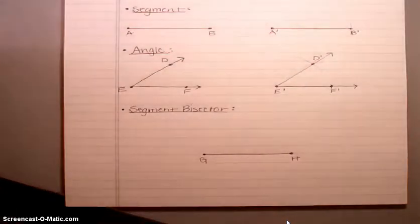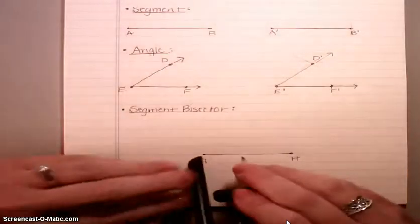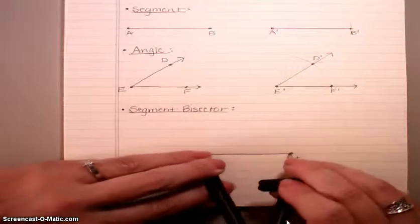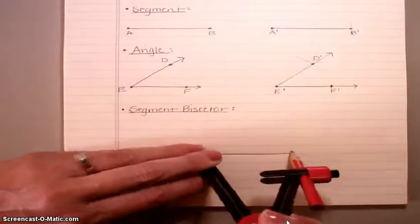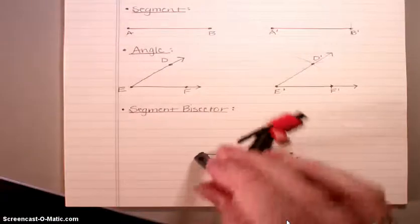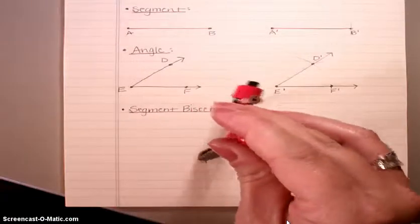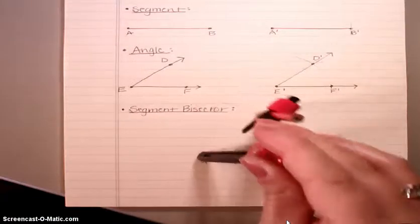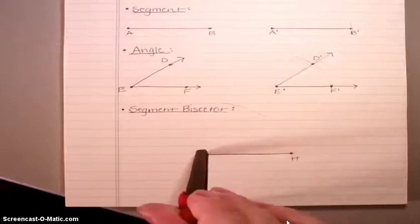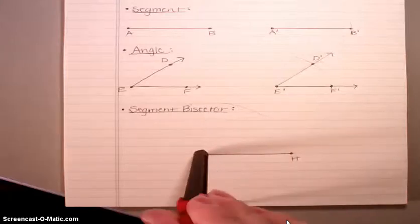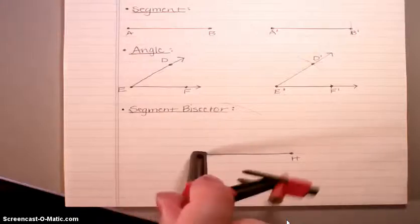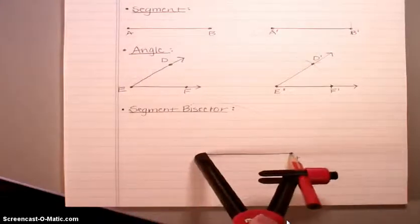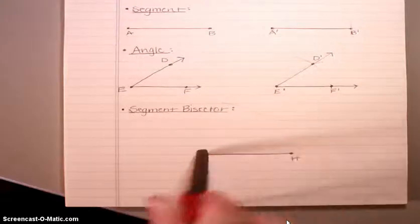Take your pin and put it on G, and take your pencil and put it on H. Leave your pin on G, come up and make a light arc above, then come below and make a light arc below. Notice I have not once taken my pin off of G. To review: I measured how long the segment was, made an arc above, and made an arc below.